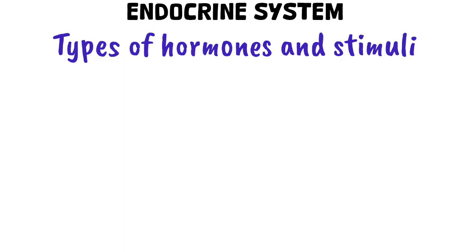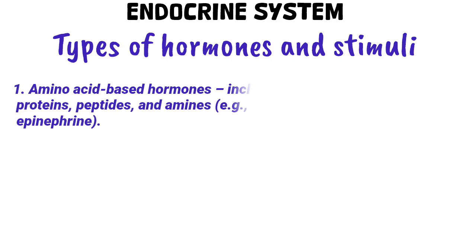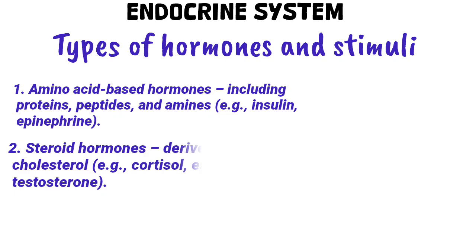Types of hormones are generally classified into two main types. One, amino acid-based hormones, which include proteins, peptides, and amides. Examples include insulin and epinephrine. Number two, steroid hormones, which are derived from cholesterol. Examples include cortisol, estrogen, and testosterone.